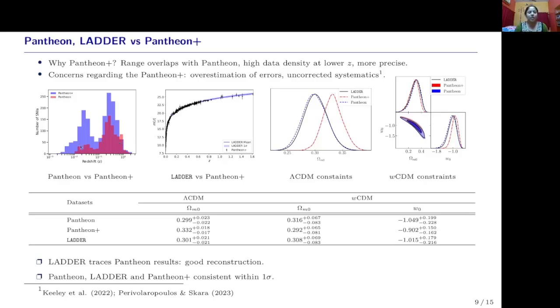This plot shows a comparison between the distribution of Pantheon versus Pantheon+ data. There are significant concerns regarding the use of Pantheon+ to do cosmology. These two references point out that there could be overestimation of errors or uncorrected systematic effects within the Pantheon+ data. With LADDER, we are trying to test these concerns in an entirely model independent way. Having trained LADDER on Pantheon data, we now make prediction at the Pantheon+ redshifts. This is a plot that shows the reconstruction, where this blue line shows the mean and the shaded region corresponds to one sigma, and this point shows the Pantheon+ dataset. We find that LADDER reconstruction and the Pantheon+ observations are consistent within the one sigma frame of the reconstruction.